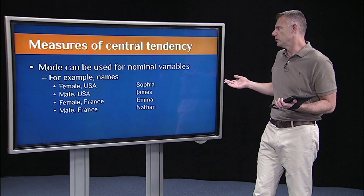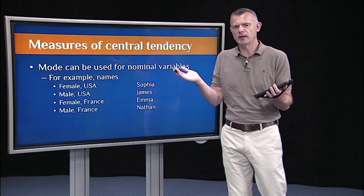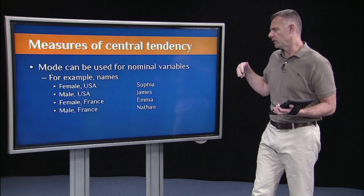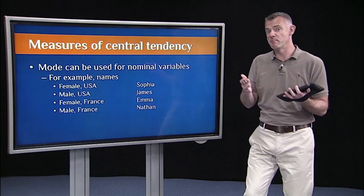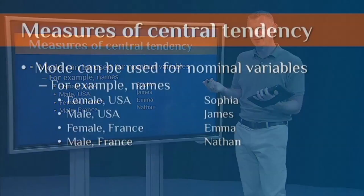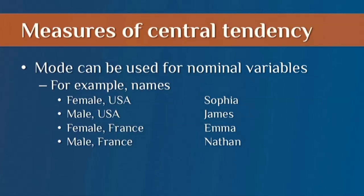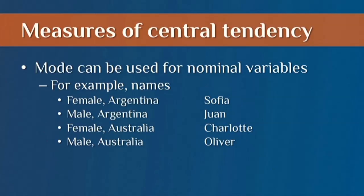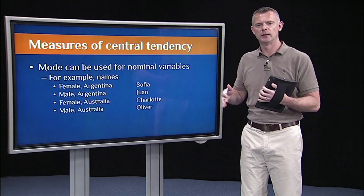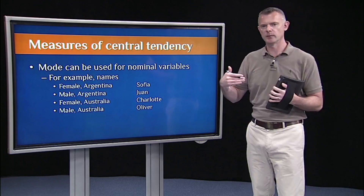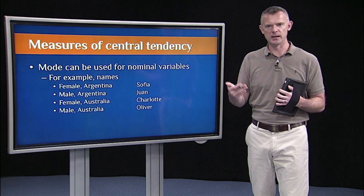For fun, I looked at the modal baby names for the countries we've been working with. In the US, the most common female baby name last year is Sophia, and the most common male name is James. In France, it's Emma and Nathan. In Argentina, it's Sophia and Juan. And in Australia, it's Charlotte and Oliver. Those are the modal baby names — the ones that occur most often. It's only the mode that we can apply to nominal variables; we can't apply the mean or the median to nominal variables.